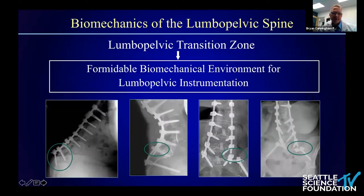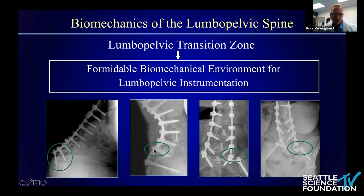In summary, when considering the biomechanics of the lumbopelvic spine, we're entering a very formidable transition zone — probably one of the most complex in the axial skeleton from a reconstruction standpoint. It provides a basis for many instrumentation-related complications, including screw pull-out, screw plow-through, rod fracture, and screw fracture.